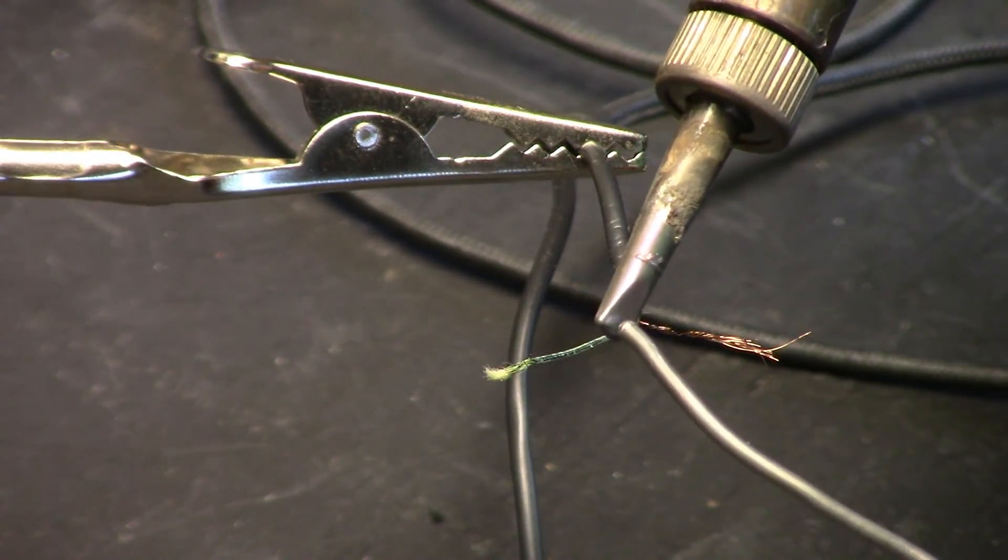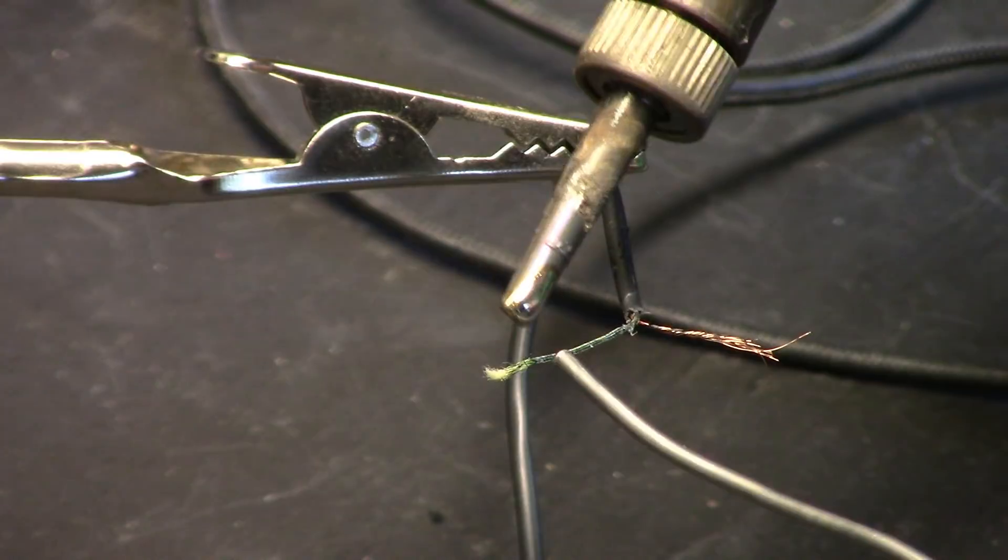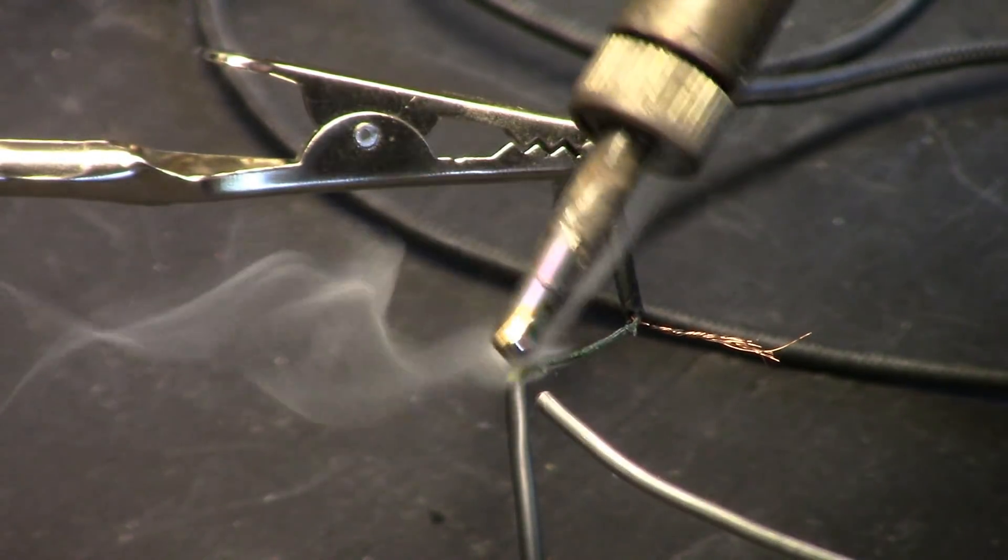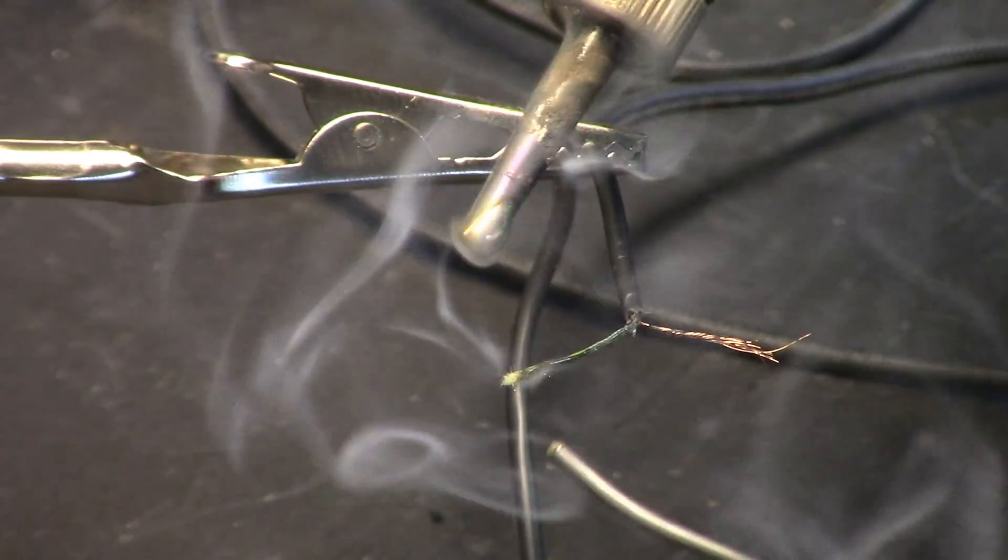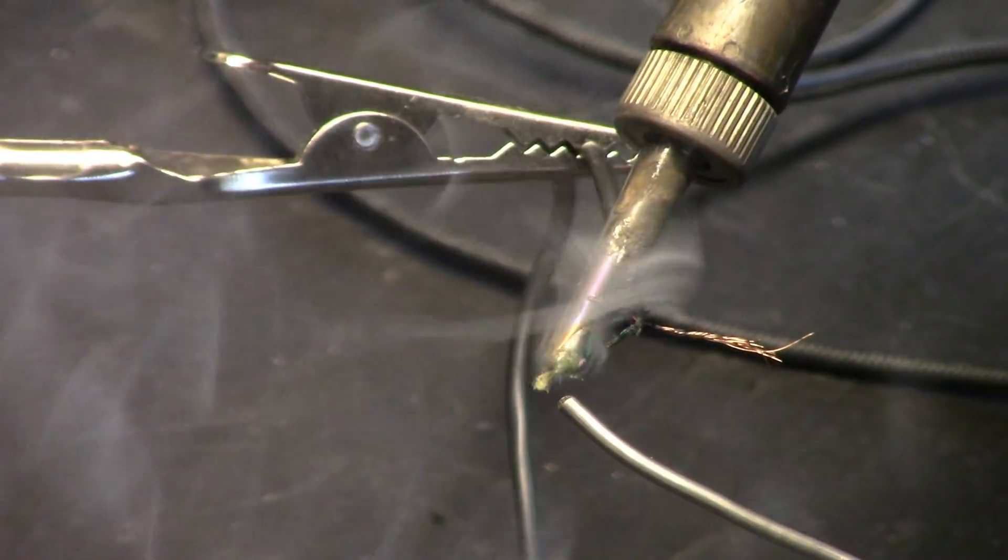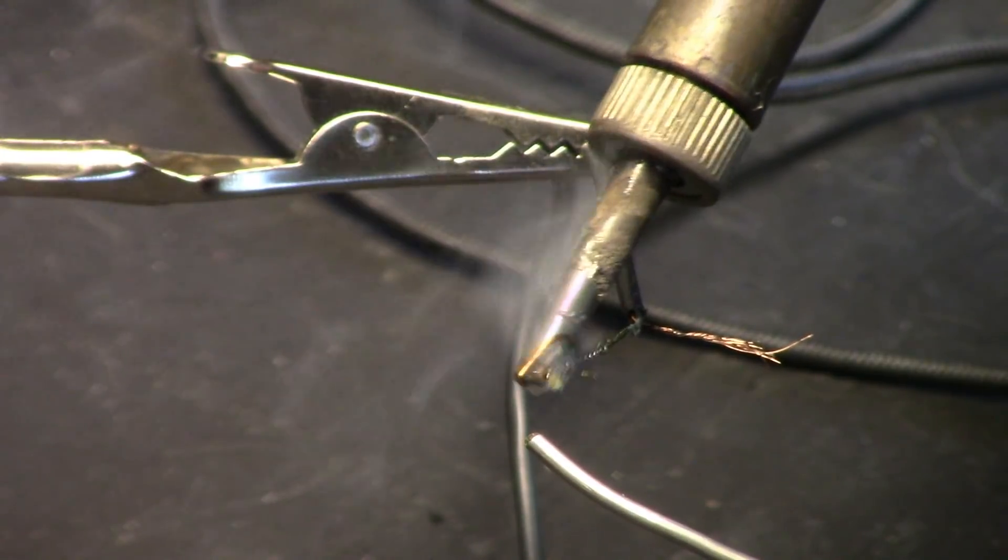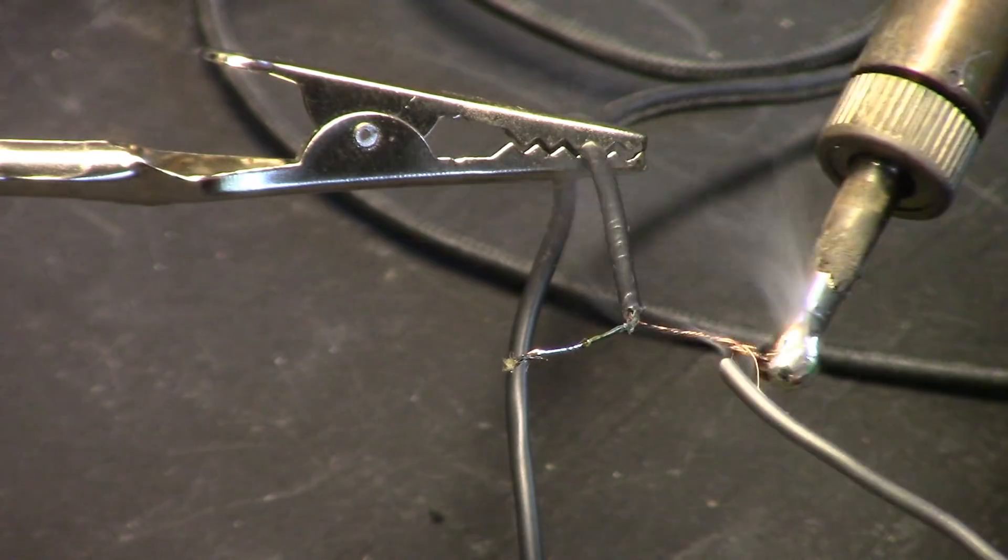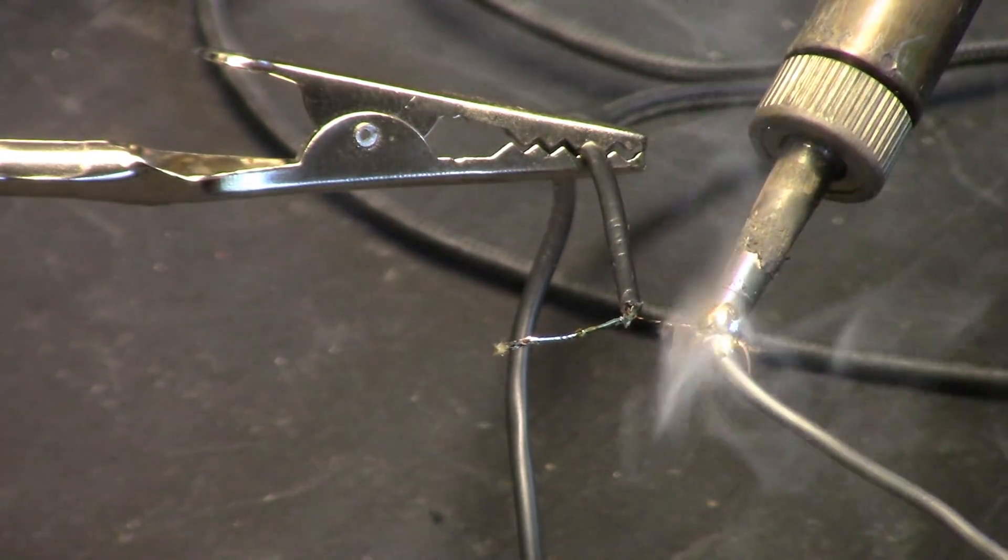When I tin it, it should melt the enamel off and the tinning should get on to the actual bare wire.